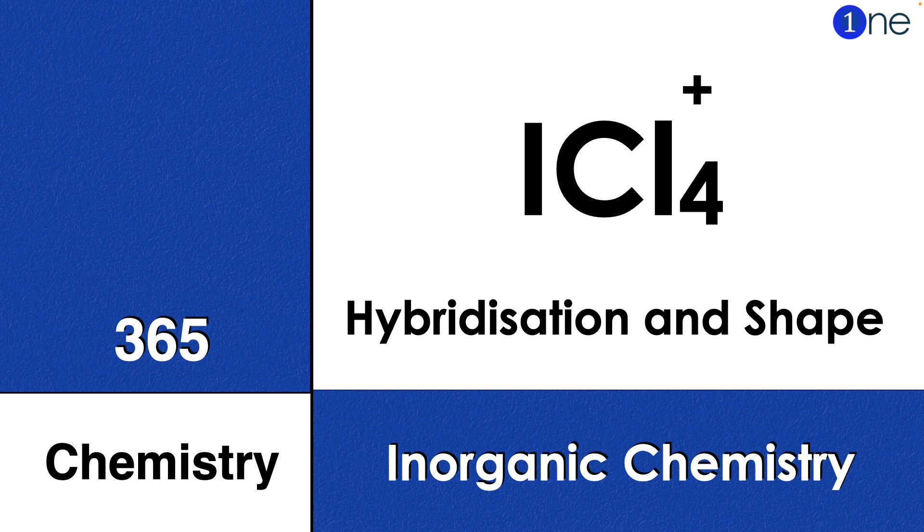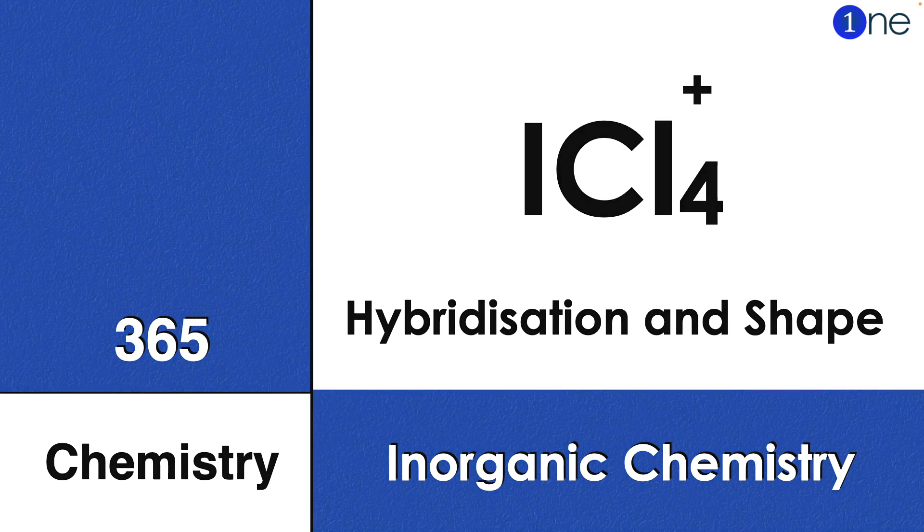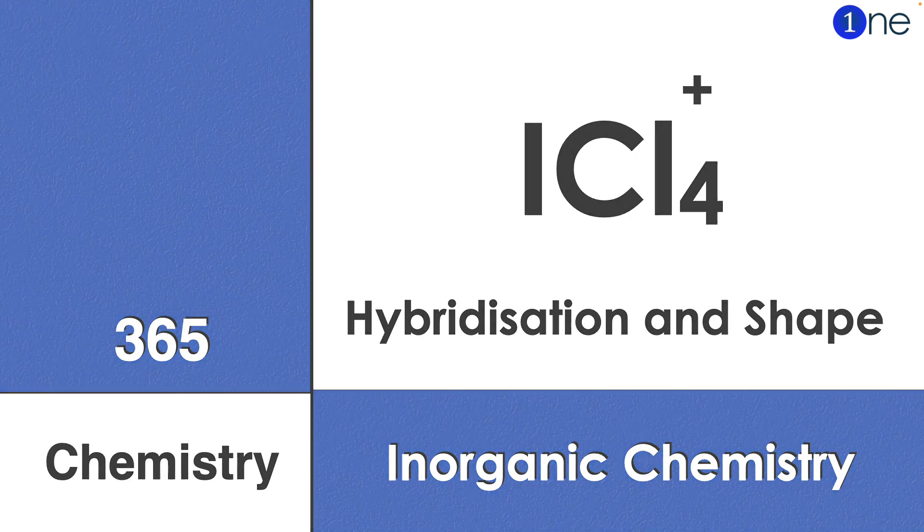Welcome to One Chemistry. This is the 365 Chemistry series, Inorganic Chemistry questions. Here they give iodine tetrachloride cation, ICl4+. You should find the hybridization and shape of it.